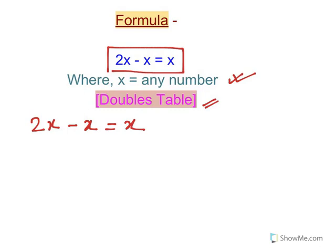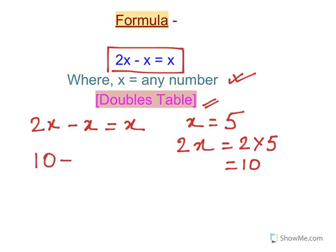Now back to our example. We can take one number like 5, so x is 5 here. So what will be 2x, that is double of x? 2 into 5, that will be 10. So 10 minus 5.